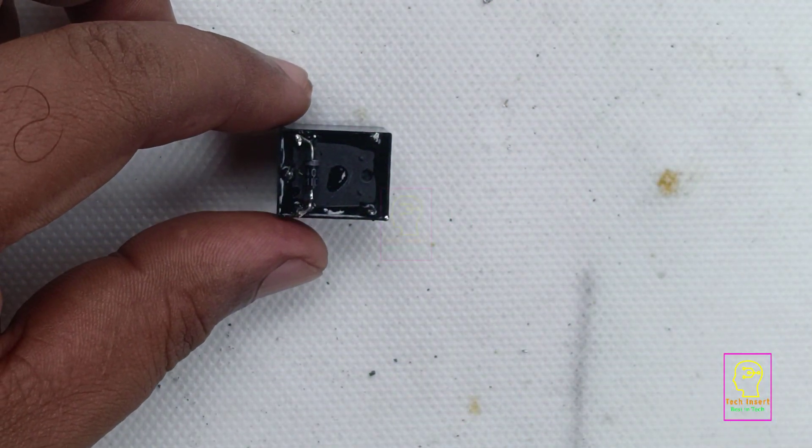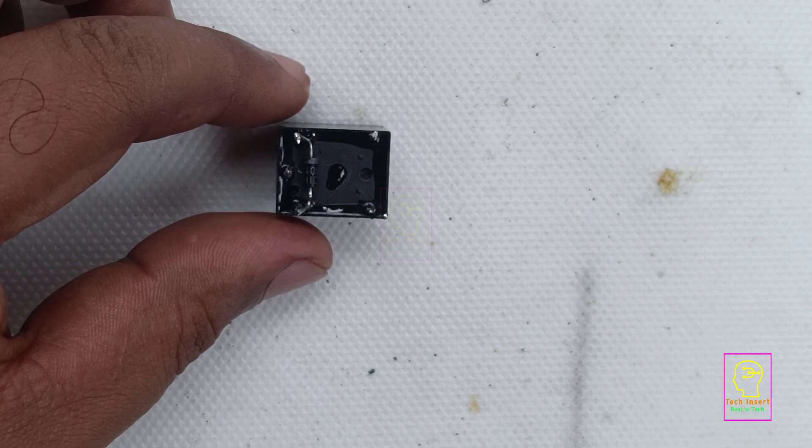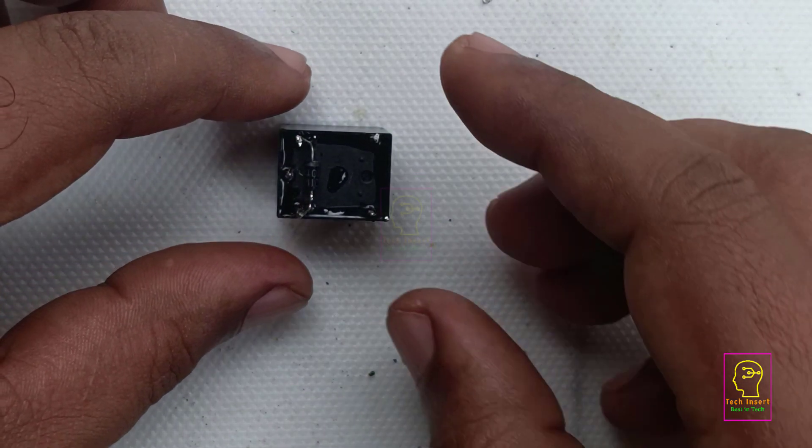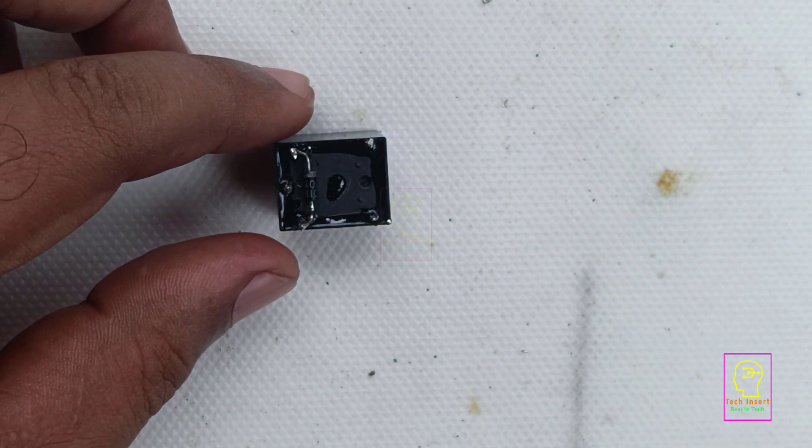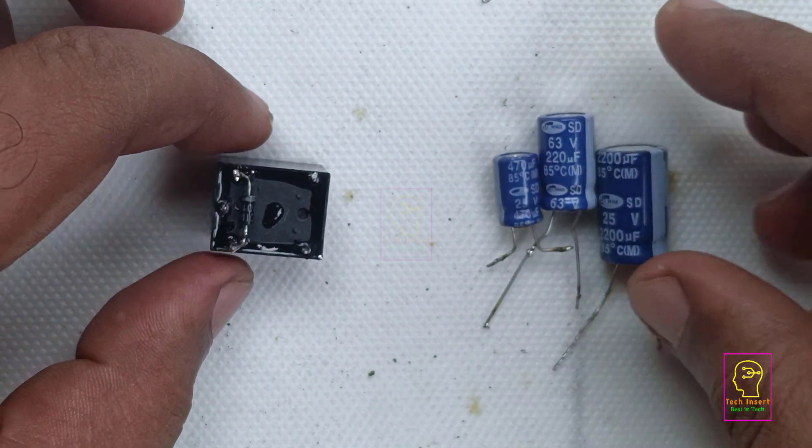Today we are going to make a simple flasher using this relay. We will add one more component to it to make it perfectly working. These capacitors we will be using for this flashing unit.